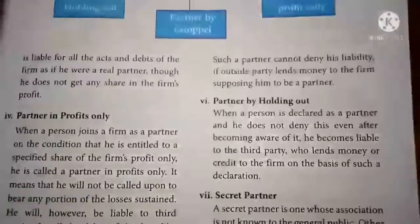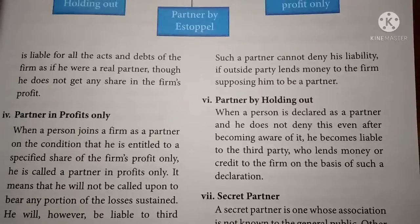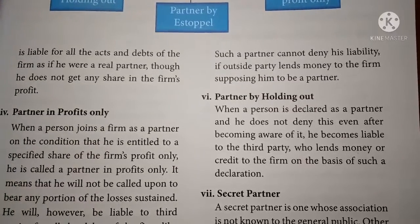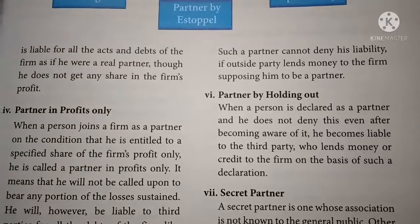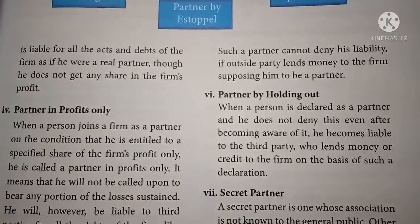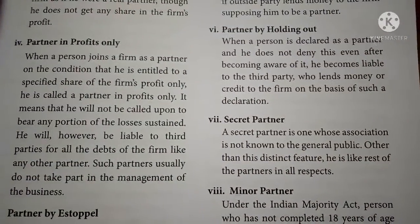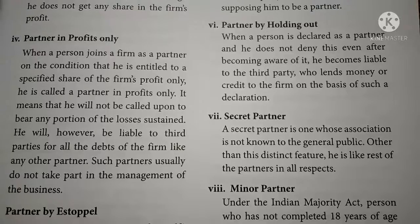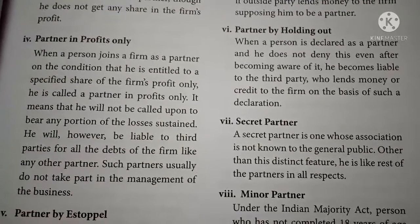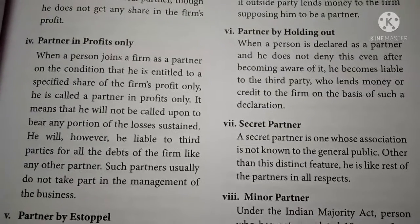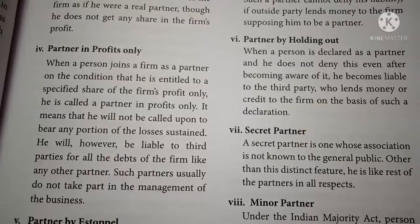Partner by holding out: when a person is declared as a partner and he does not deny it even after becoming aware of it, he becomes liable to third parties. Such a partner is called a partner by holding out. Secret partner: a secret partner is one whose association is not known to the general public — he will not be shown as a partner to the public, but he is a partner in the partnership firm.